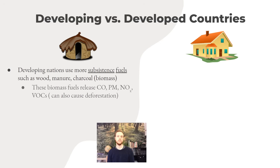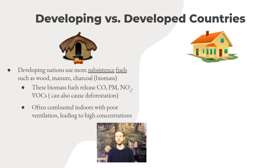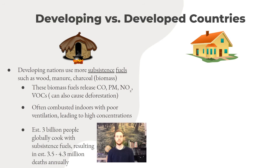A lot of air pollutants are released when these materials are combusted, including carbon monoxide, particulate matter, NOx, and volatile organic compounds. This is especially problematic because subsistence fuels are often combusted indoors — whether for cooking meals or heating the home — with poor ventilation, leading to toxic and deadly concentrations. It's estimated that about 3 billion people globally cook or heat with subsistence fuels, making it the second or third leading cause of death globally, with 3.5 to 4.3 million deaths annually.